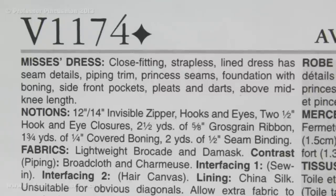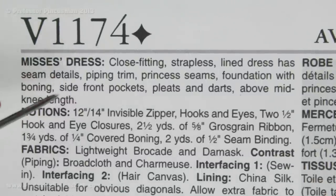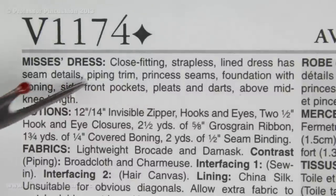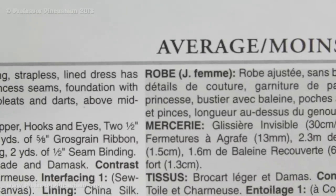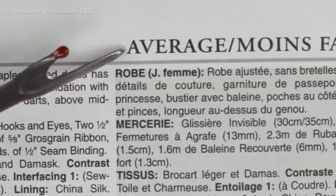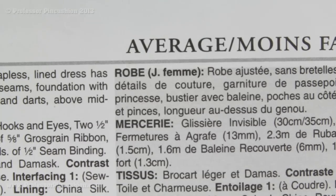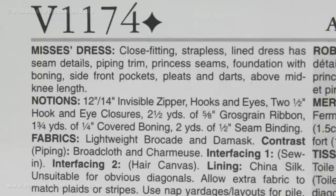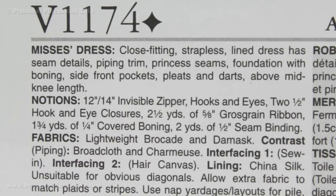Here's another example with my Vogue pattern. Again at the top we have a description — it's telling you there's going to be piping, princess seams, boning, pockets, all these different elements. Looking at the difficulty level, they're saying it's average, which is a little bit higher than easy. This is important to look for because if you are a beginner sewer without a lot of experience working with patterns, you may want to look for ones that are easy and don't have quite as many elements.